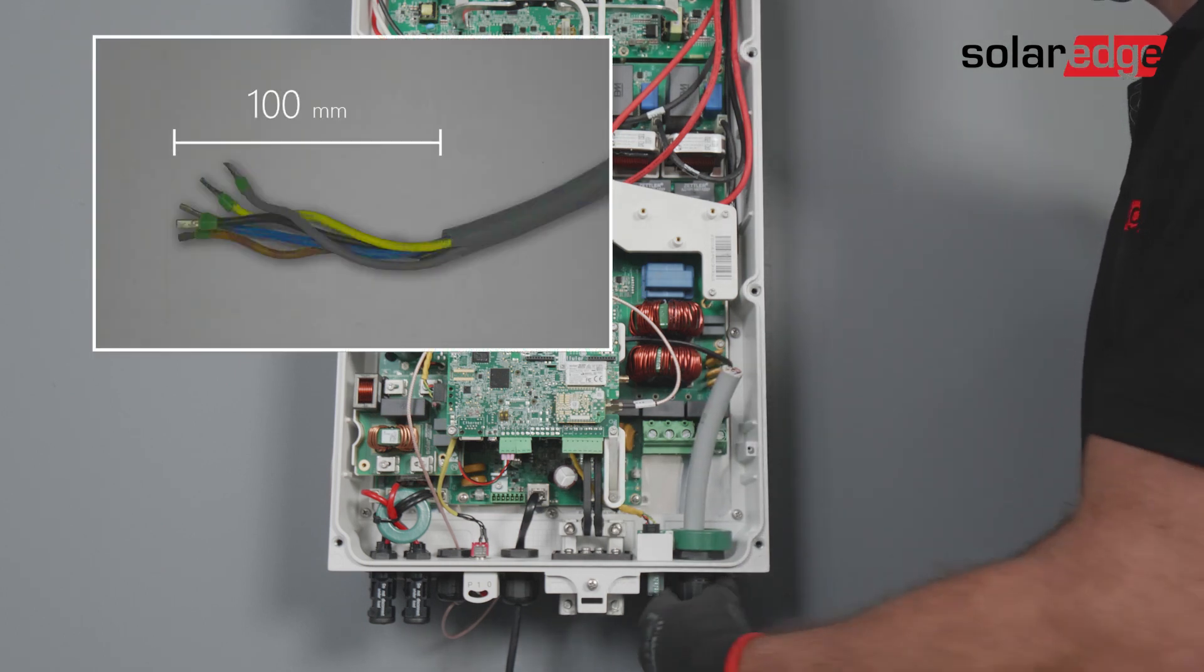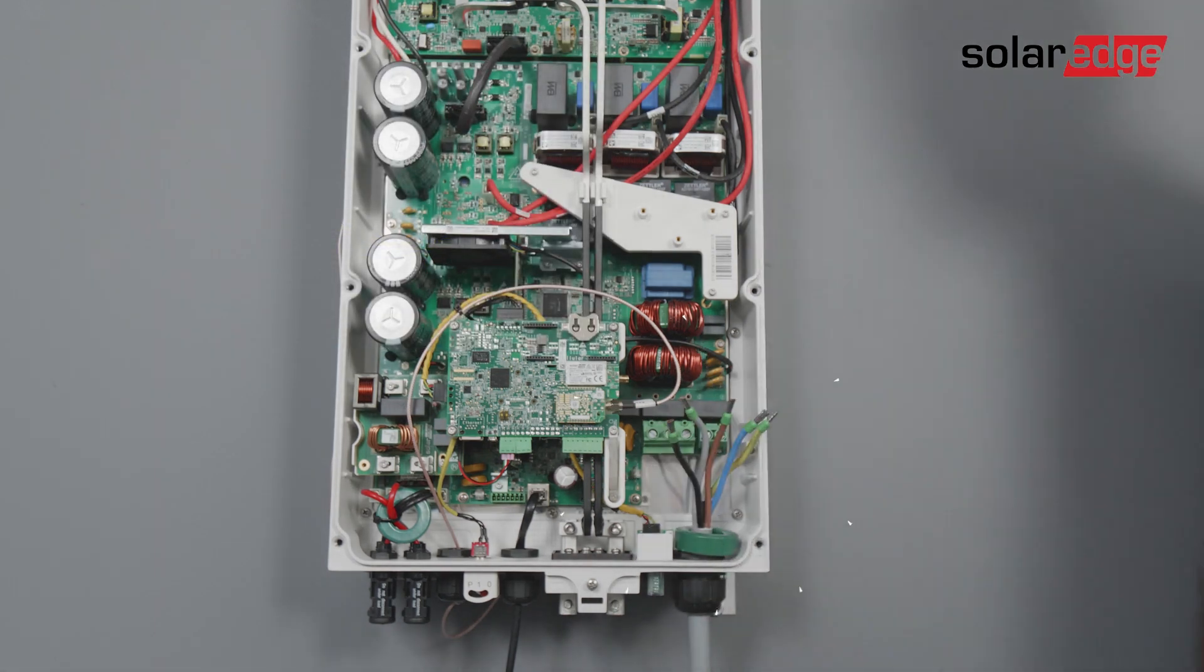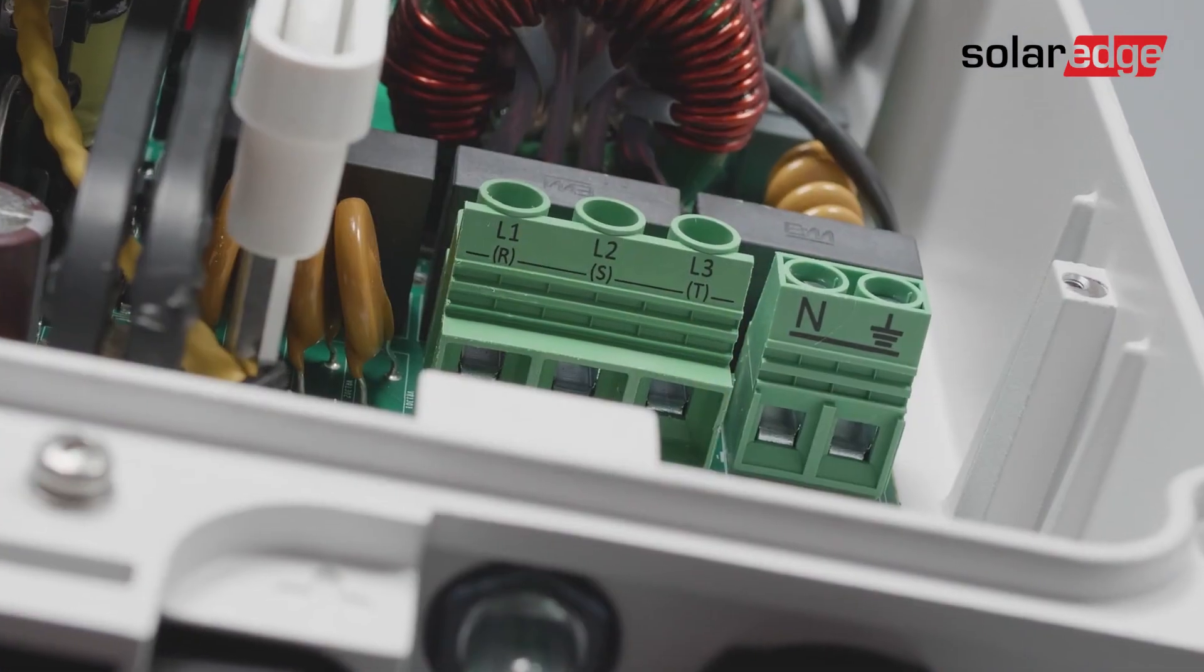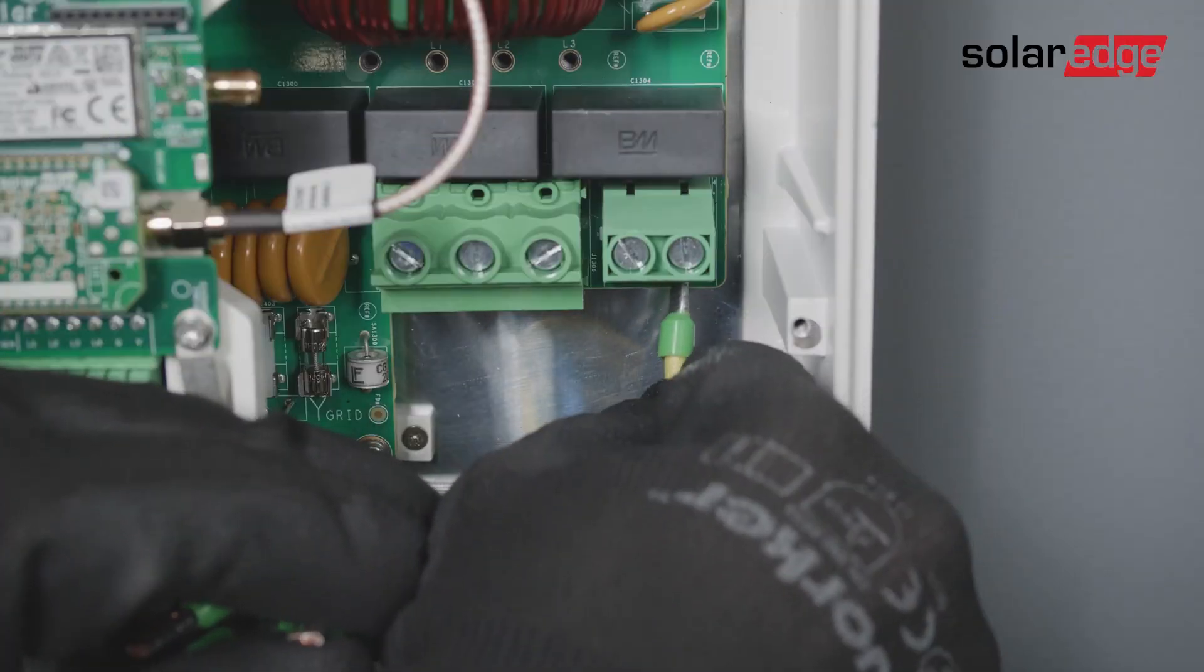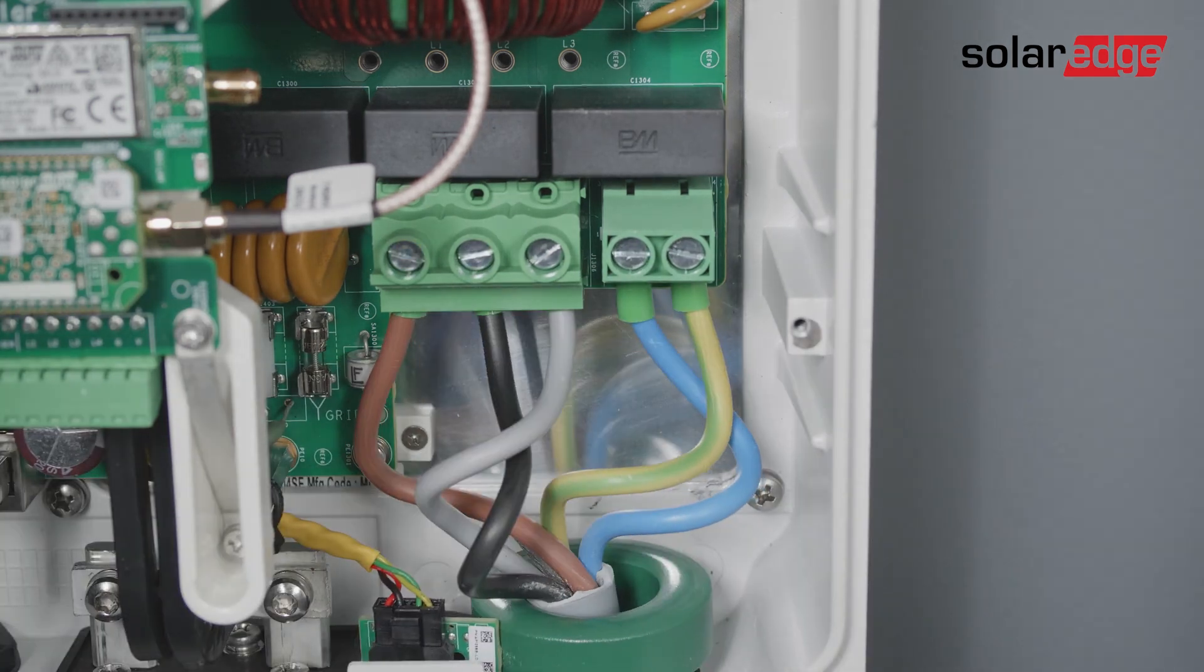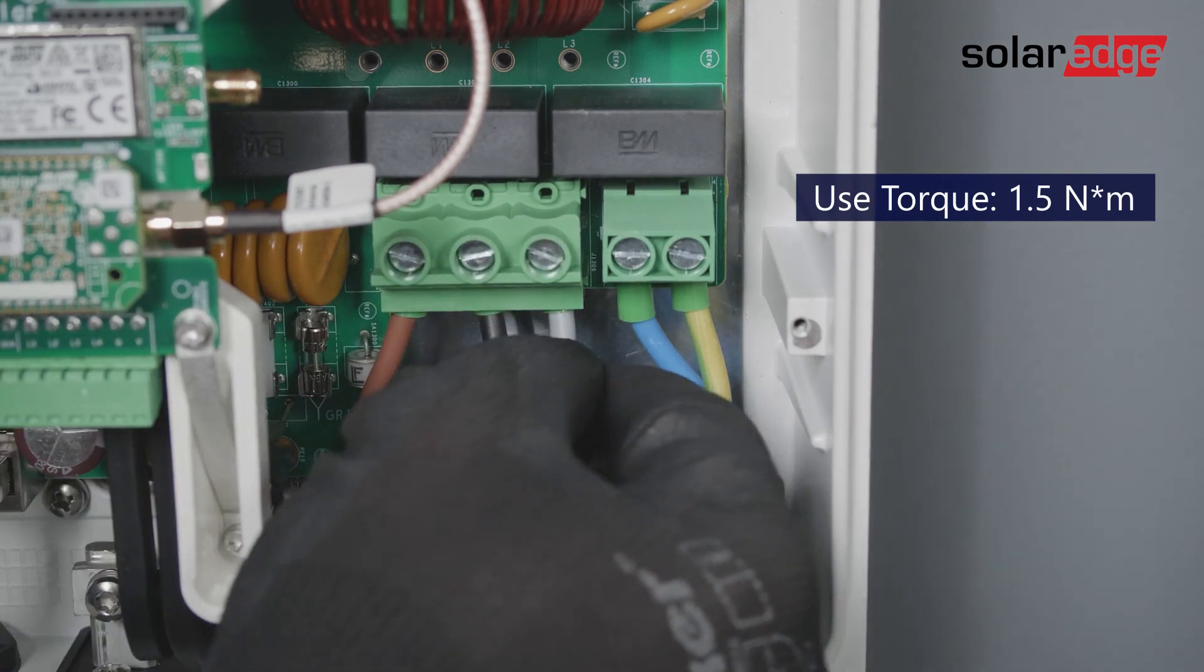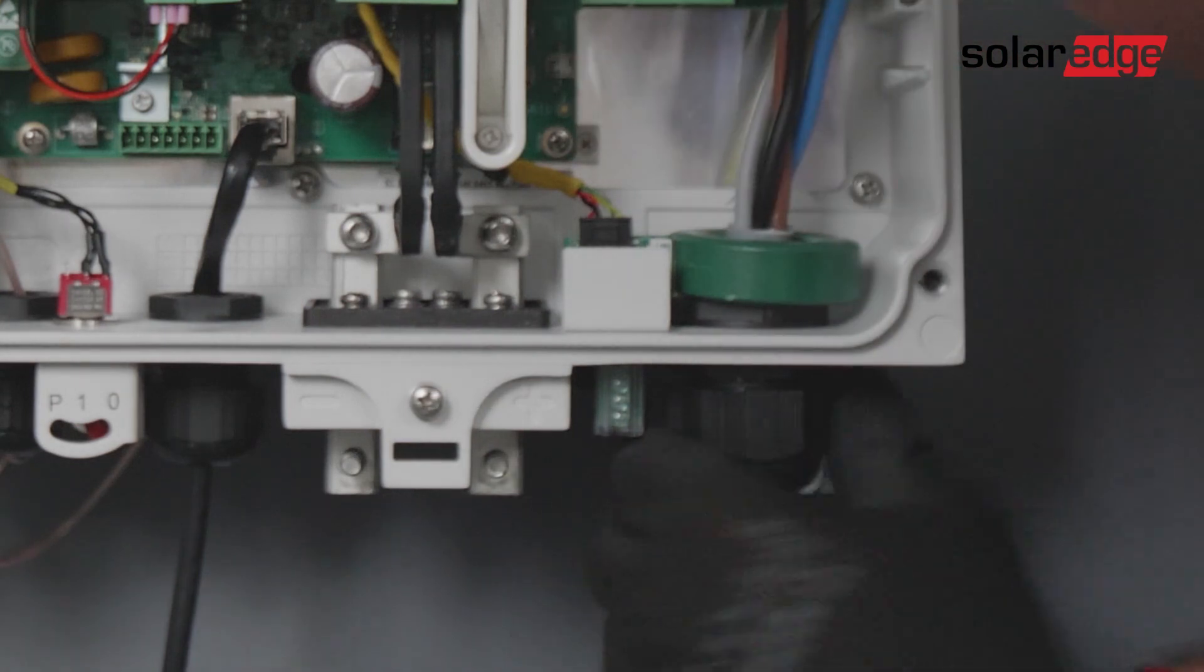Strip 100 millimeters of the external cable insulation and strip 8 millimeters of the internal wire insulation and crimp the wire ferrules. Connect the AC cable to the AC terminals. Please note the marking on the connectors. Connect the grounding wire first. Tighten the terminal block screws. Check that the wires are fully inserted and cannot be pulled out easily. Tighten the AC cable gland.